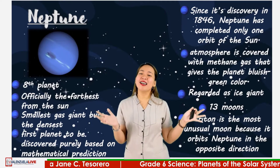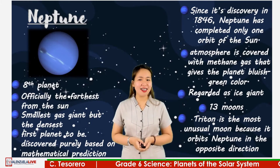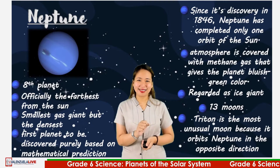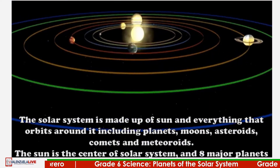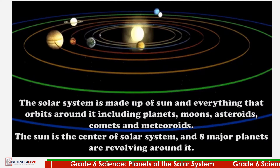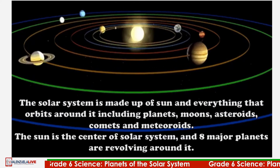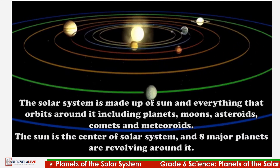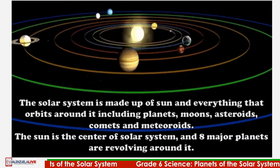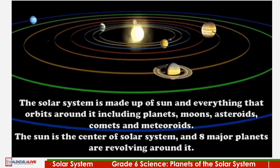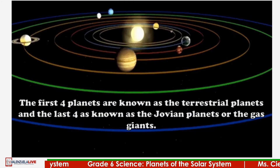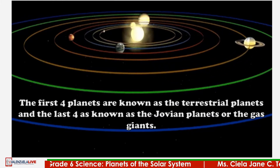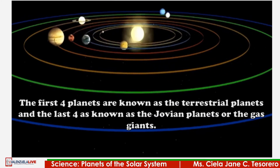Now let us recall the concepts and planets that we have learned. The solar system is made up of the sun and everything that orbits around it, including planets, moons, asteroids, comets, and meteoroids. The sun is the center of the solar system, and eight major planets revolve around it. The first four planets are known as the terrestrial planets, and the last four are known as the Jovian planets or gas giants.